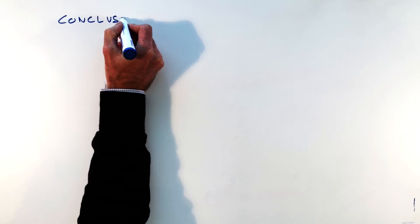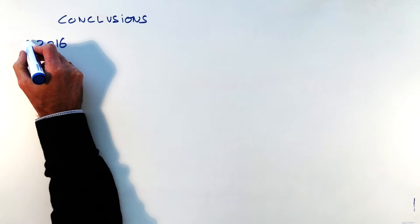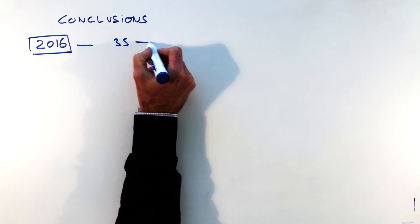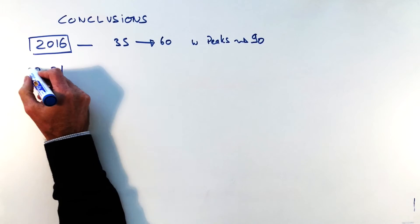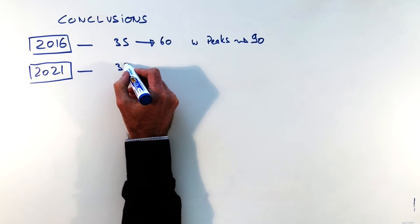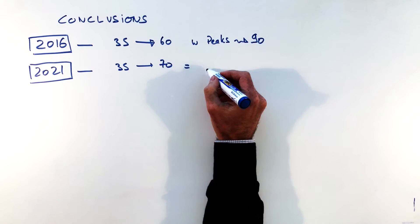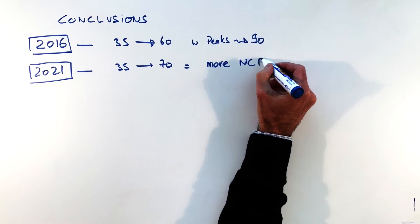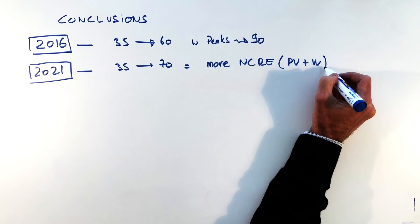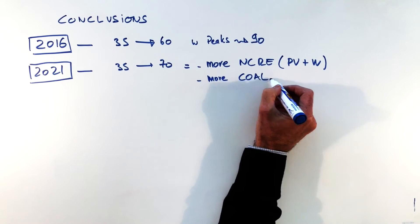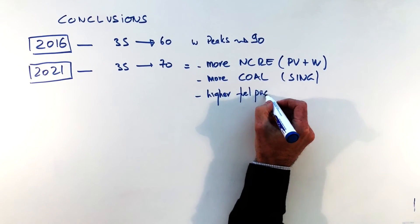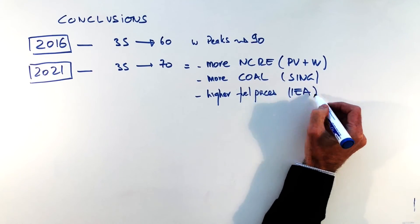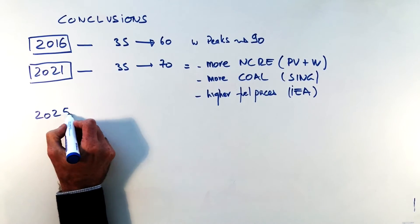So our conclusions, 2016 we will see prices between 35 and 60 dollars per megawatt hour with peaks at roughly 90 dollars. 2021 we will see prices between 35 and 70 dollars per megawatt hour due to three reasons: more renewables in the system, PV and wind, more coal coming from the SING with 2,000 megawatts and higher fuel prices that would justify the peaks a bit higher at 70 dollars.